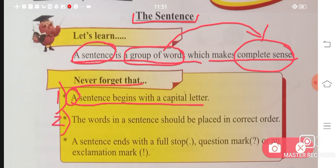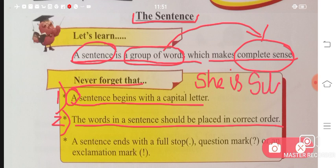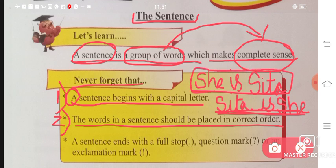Next point says the words in a sentence should be placed in correct order. If I say 'she is Sita,' that's a sentence. But if I write 'Sita is she' and change the word positions, we cannot understand its meaning properly. Words must be in proper order to be part of a sentence.